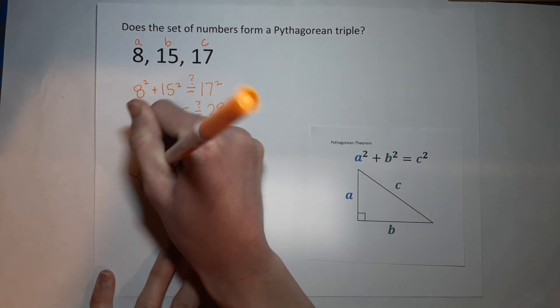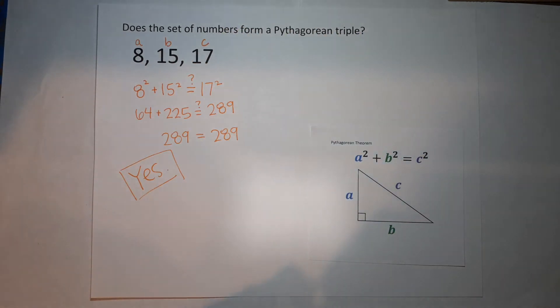So we have 289 equals 289. So yes, this is a Pythagorean triple.